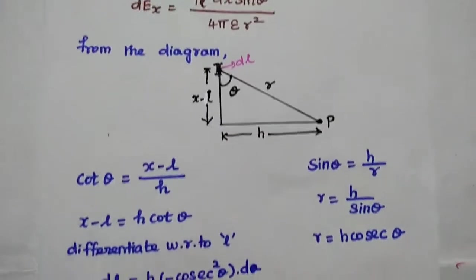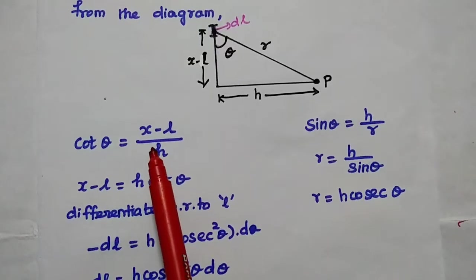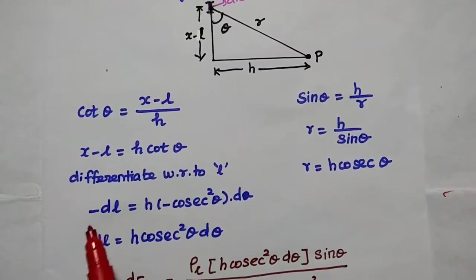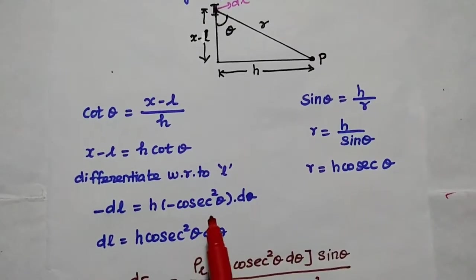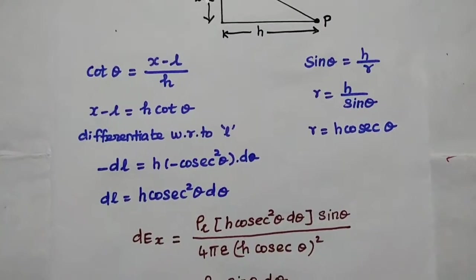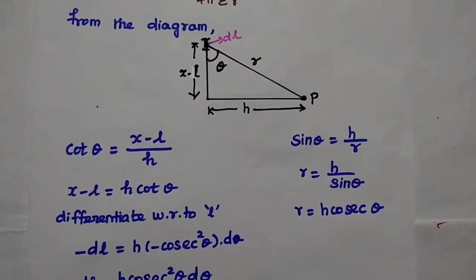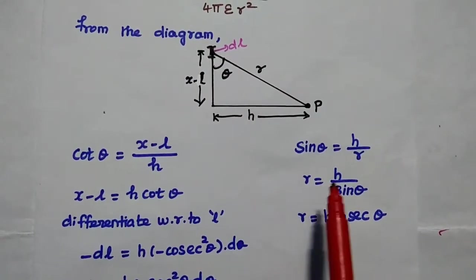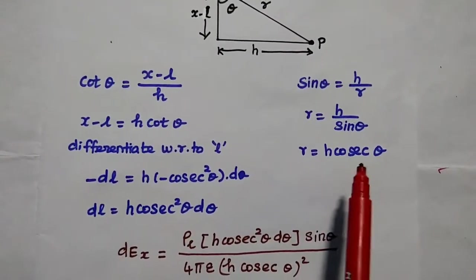From the diagram, cosθ equals (x − L) / h, so x − L = h·cosθ. Differentiating with respect to L gives minus dl = h·(−csc²θ)·dθ, so dl = h·csc²θ·dθ. Also from the diagram, sinθ = h / r, so r = h / sinθ = h·cscθ. We now substitute these expressions for r and dl into the formula.